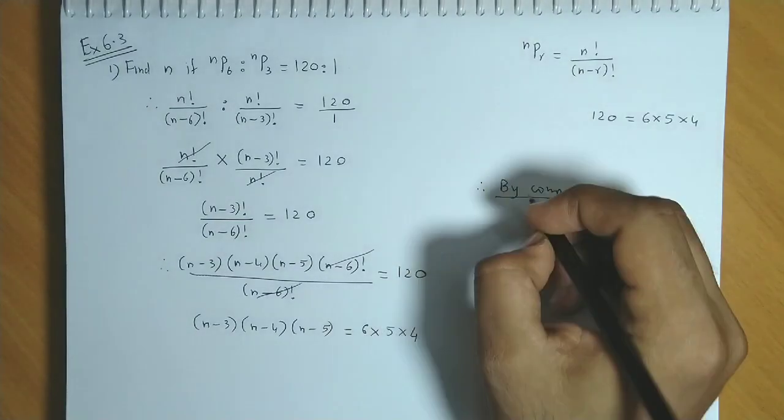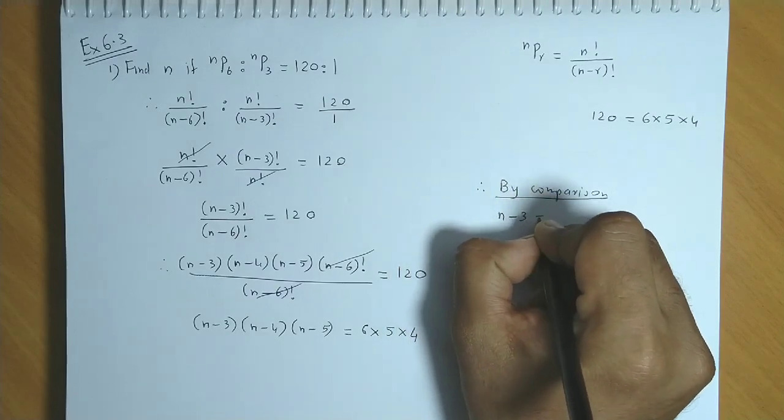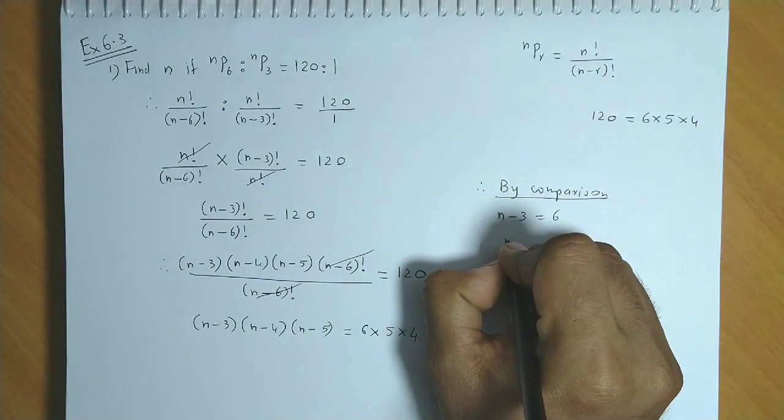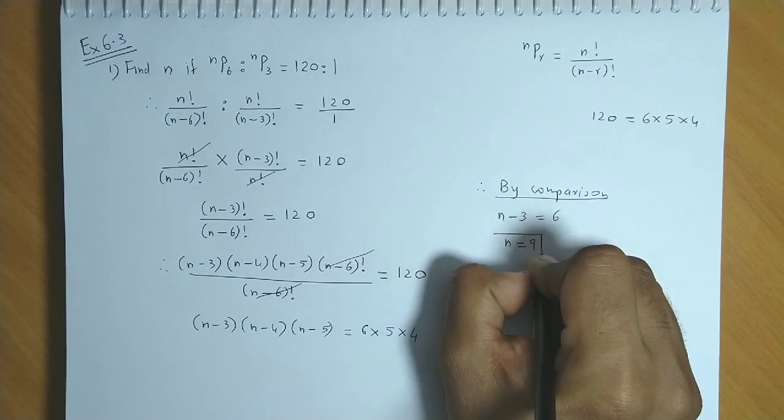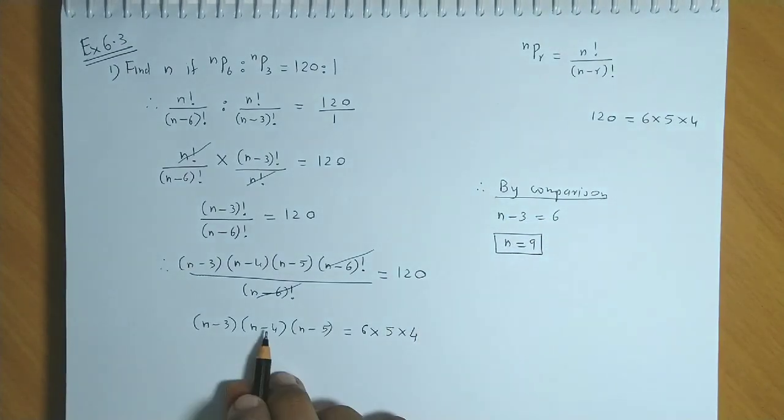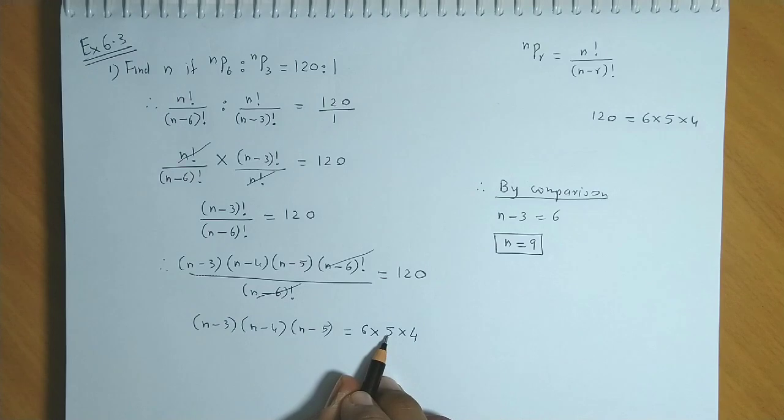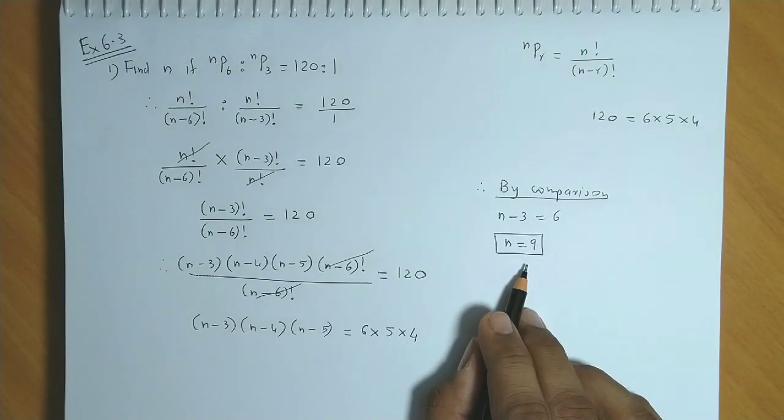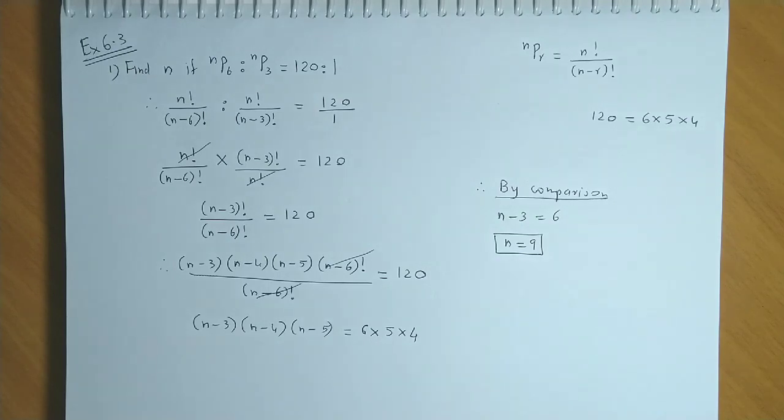First factor with first factor, that is n minus 3 equal to 6. From here we get n's value as 9. We could also equate the second factor with the second factor, and the answer will be the same, 9. Or if we equate the third factor with the third factor, then also the answer would be 9. So the required answer is n is equal to 9.